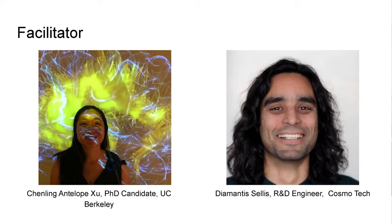I'm Chen Ling. I'm a PhD candidate at UC Berkeley in the computational biology program, and my research is mainly focused on making tools to analyze single cell RNA sequencing data. A lot of the examples I'm gonna give today is related to that research. Diamentis Zalas is an R&D engineer at Cosmotech and he's gonna join us via video soon to talk about the evolutionary biology side.